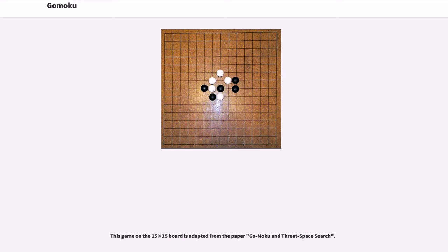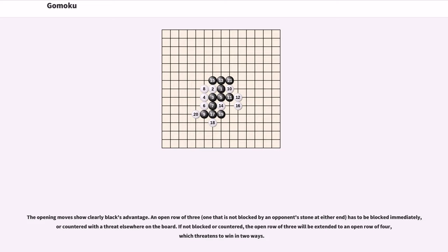This game on the 15x15 board is adapted from the paper Gomoku in Threat-Based Search. The opening moves show clearly black's advantage. An open row of three, one that is not blocked by an opponent's stone at either end, has to be blocked immediately, or countered with a threat elsewhere on the board. If not blocked or countered, the open row of three will be extended to an open row of four, which threatens to win in two ways.